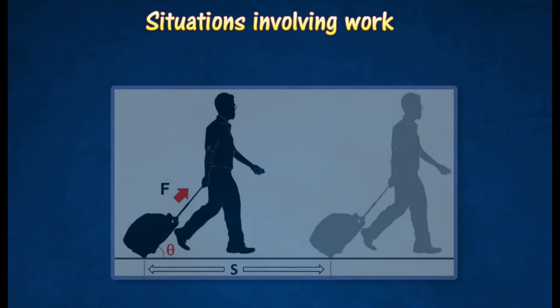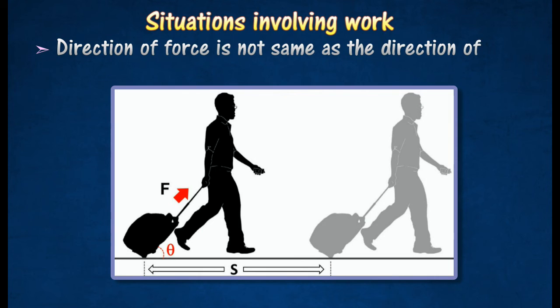When pulling a bag, the direction of force is not the same as the direction of displacement. Thus, the total force used when pulling a bag must be identified first using F cos theta in order to find work done.